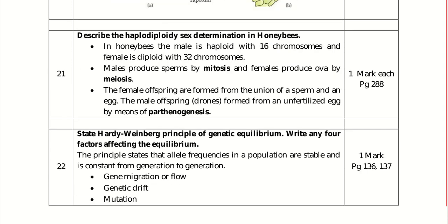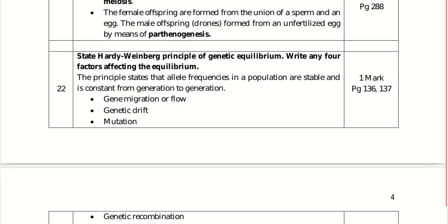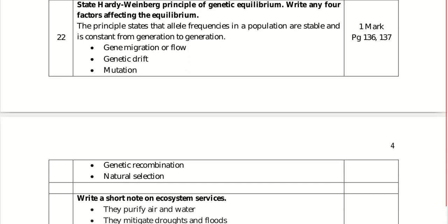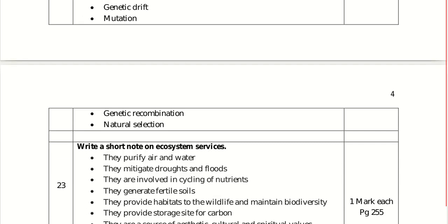State the Hardy-Weinberg principle of genetic equilibrium and mention any four factors affecting the equilibrium. Hardy-Weinberg principle states that allele frequencies in a population are stable and constant from generation to generation. Four factors affecting equilibrium are: gene migration or gene flow, genetic drift, mutation, genetic recombination, and natural selection.